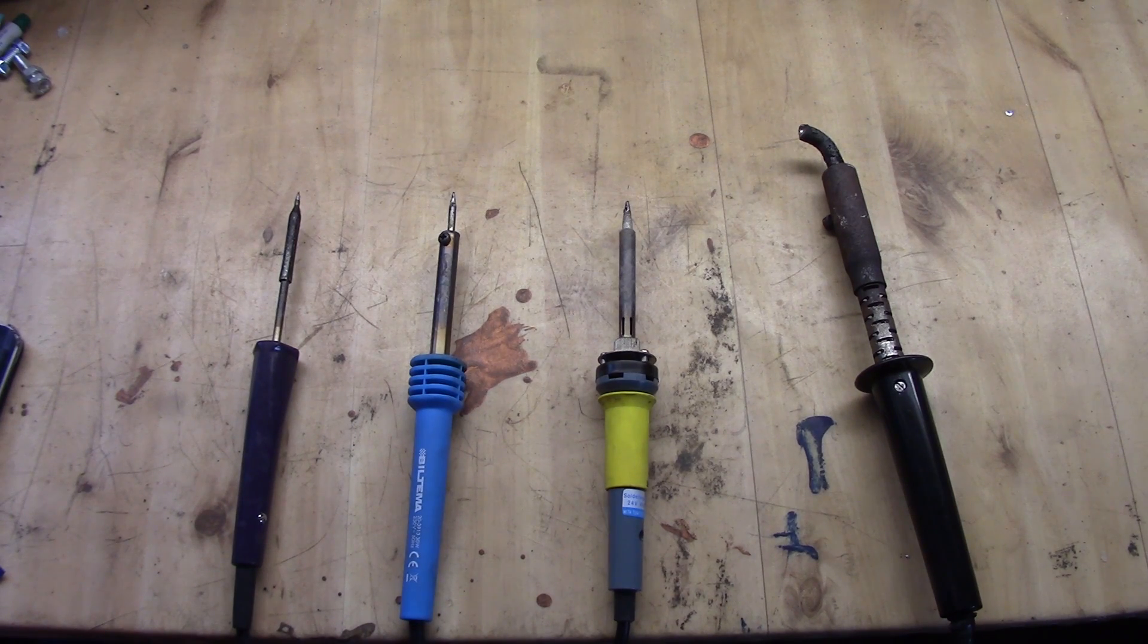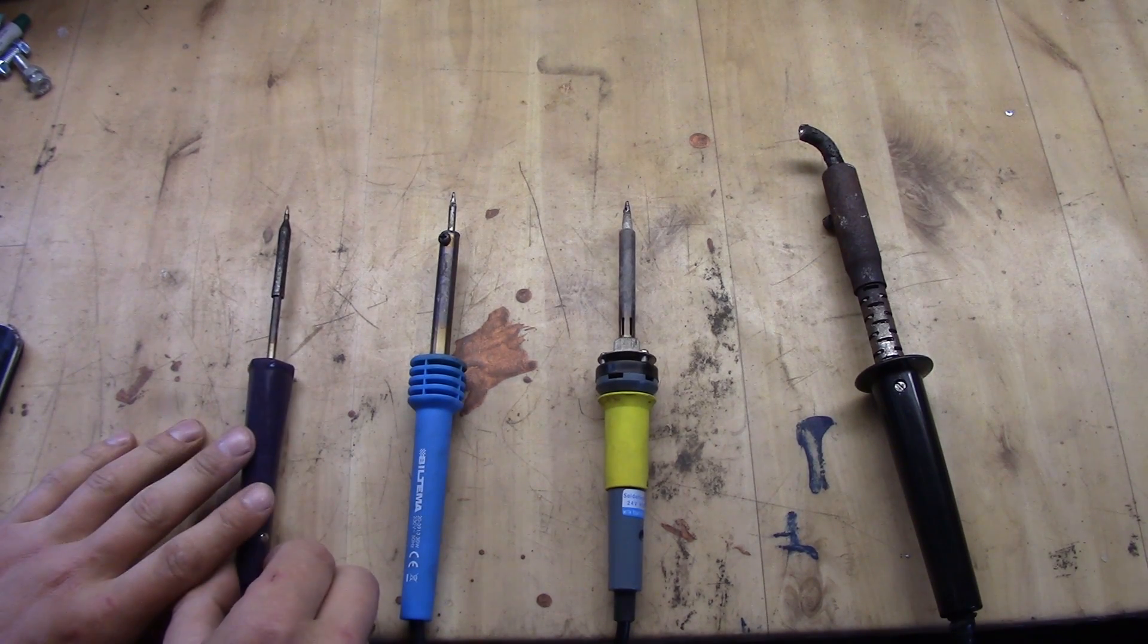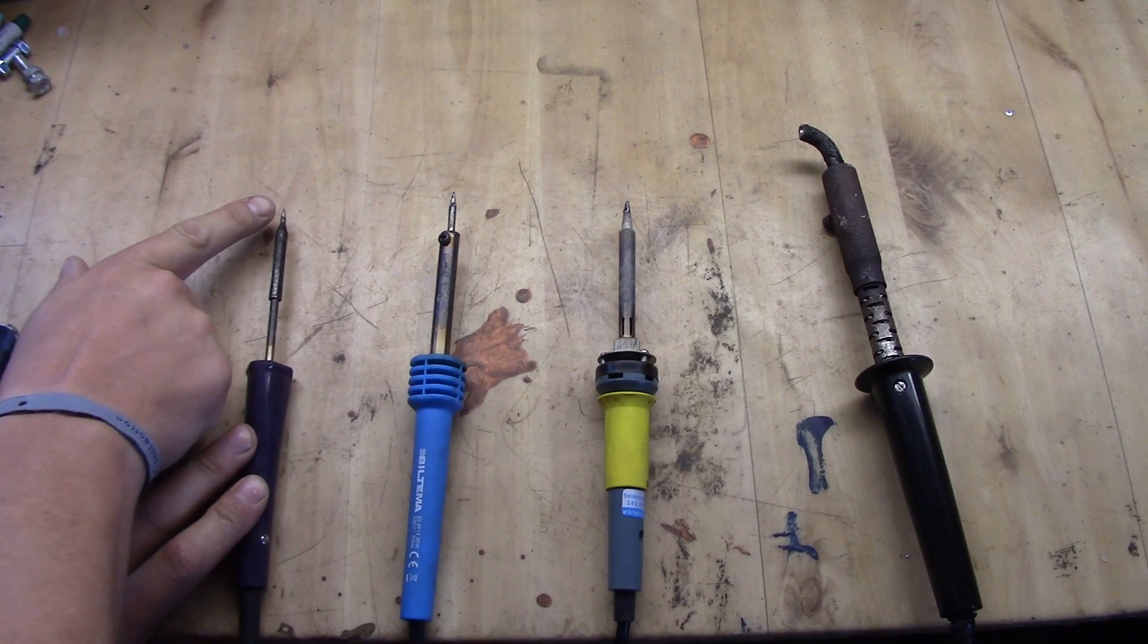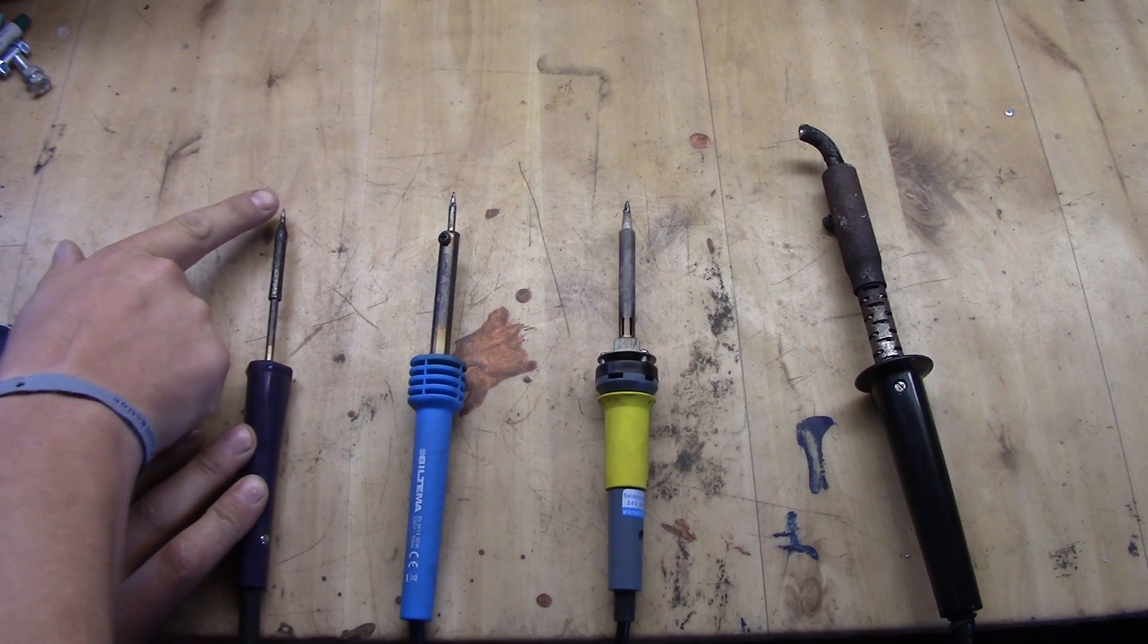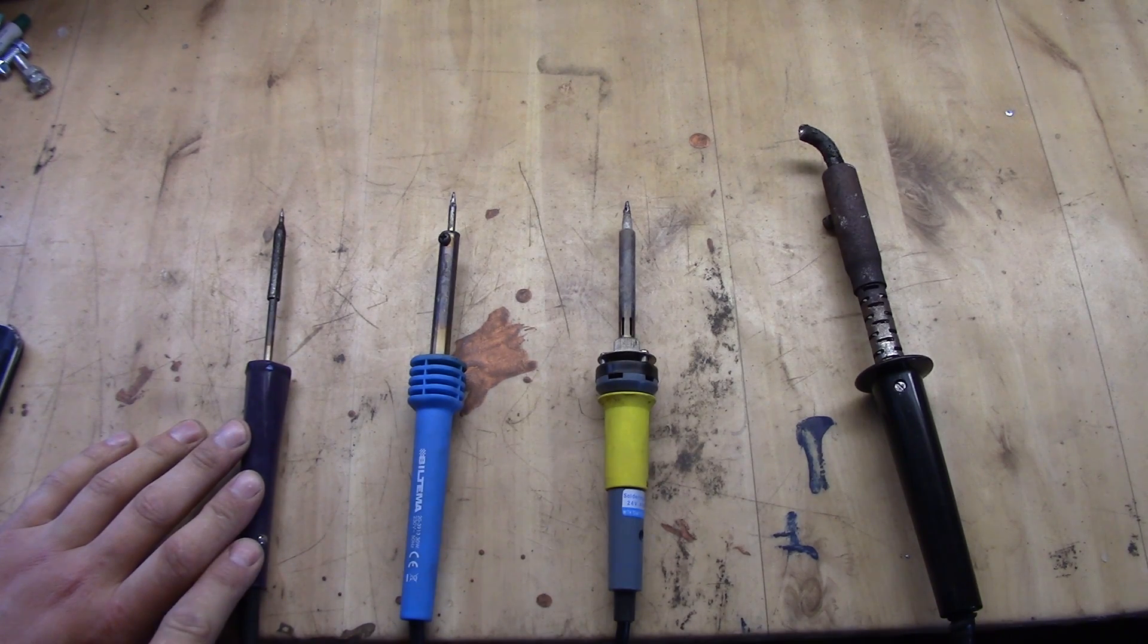As you can see here I have four different irons. If we go from the left, this one is a 15 watt, a fine tip, it's actually around 0.2 mm.